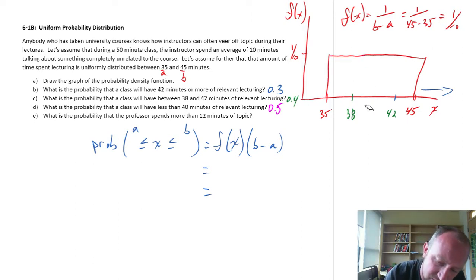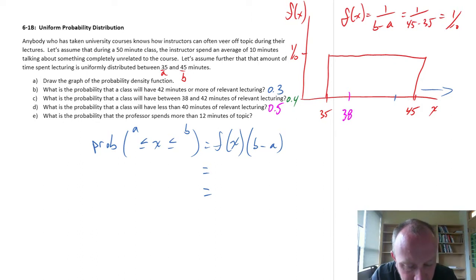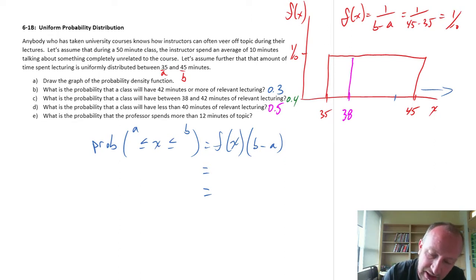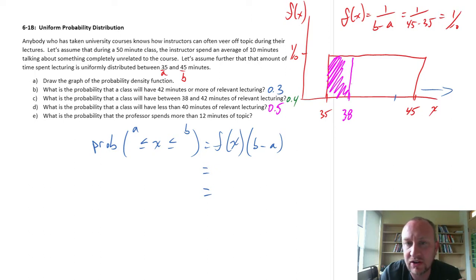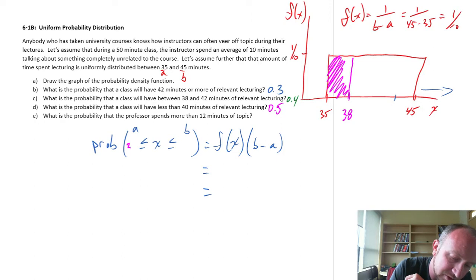So we're looking at 12 minutes off topic is 38 minutes on topic. And here we're looking at spends more than 12 minutes off topic. So that means 38 minutes or less of relevant lecturing. And so again, the minimum here is 35. So the lowest possible value is going to be 35. So this is going to be 35 to 38.